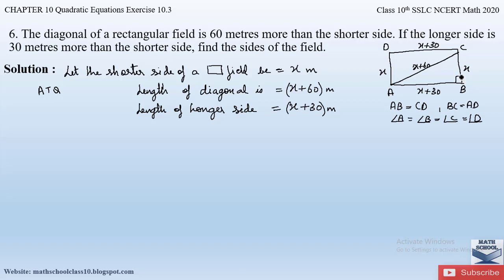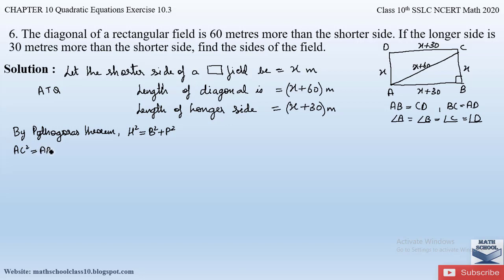The Pythagorean theorem says: hypotenuse² = base² + perpendicular². In right-angled triangle ABC, the hypotenuse is AC, the base is AB, and the perpendicular is BC. So: AC² = AB² + BC².